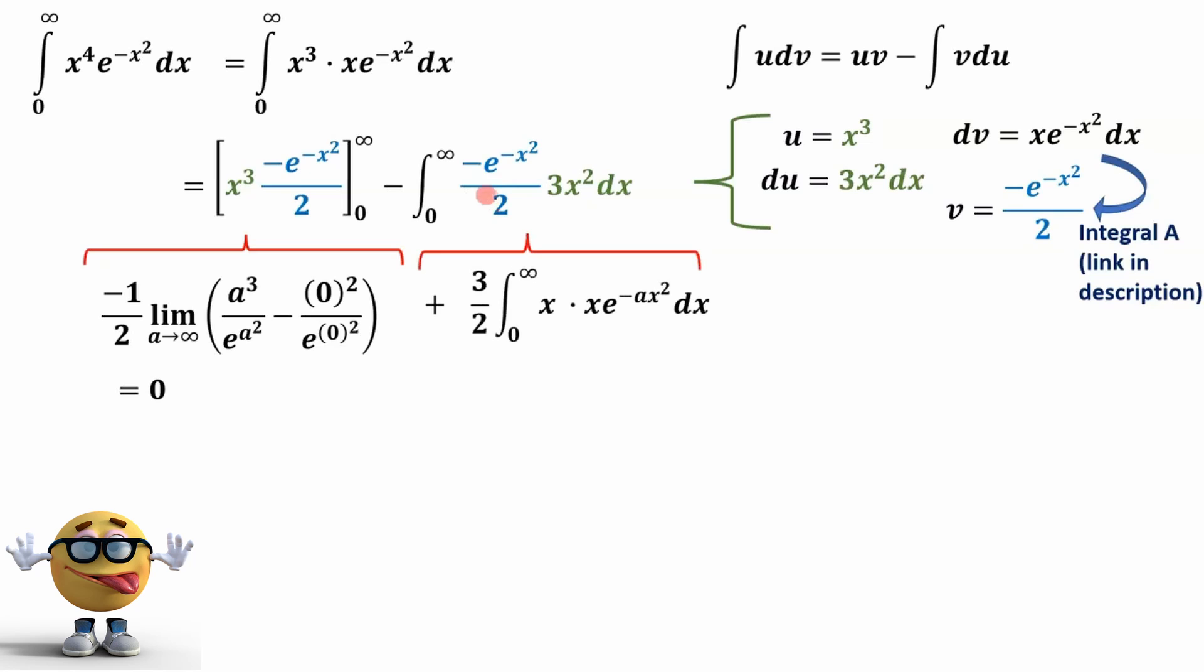So we're going to clean it up, and these two negatives cancel to make a positive. The 3 over 2 we're going to yank out of the integral, and now we have to deal with the integral of x squared, which I'm splitting up into x times x times e to the negative x squared. And I'm splitting this up for the same reason as why I split this one up. So we can do integration by parts again.